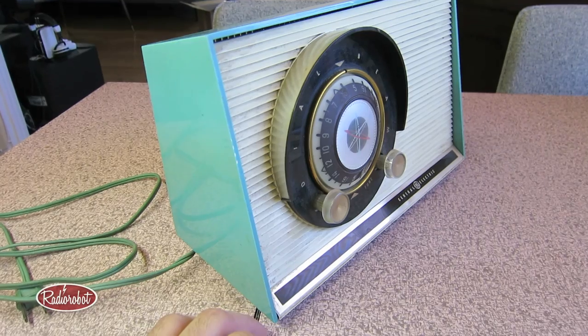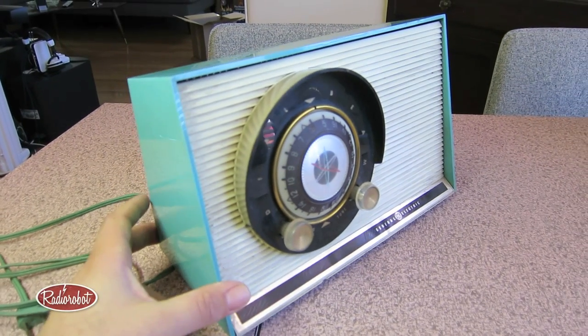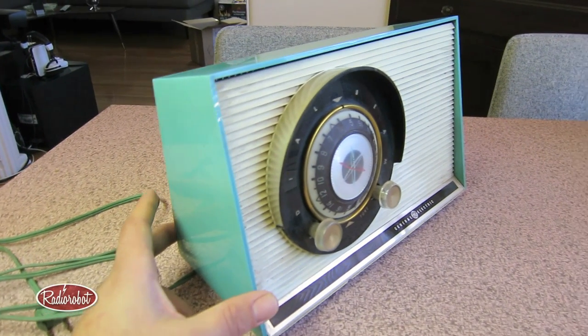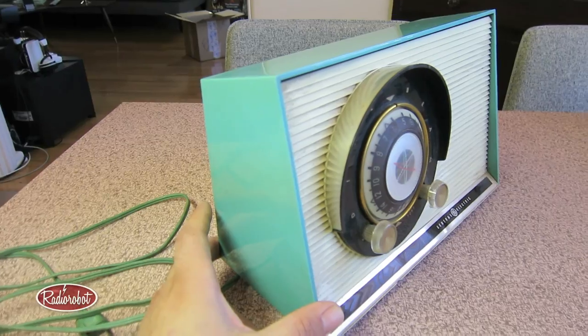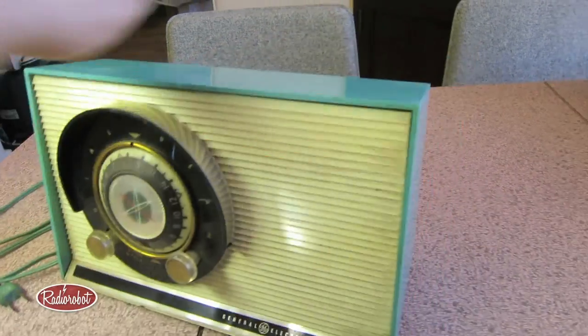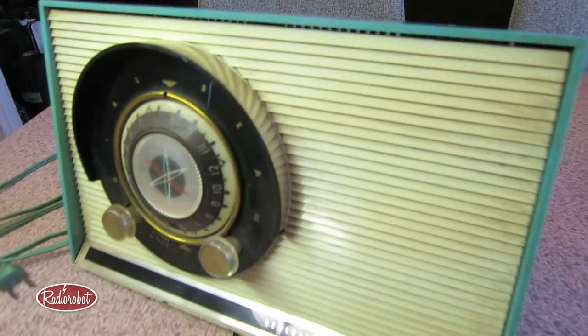And you can see here it's this beautiful teal color. This is the third model in the series for this one. As far as colors go, there's a red and a maroon sort of brown color.